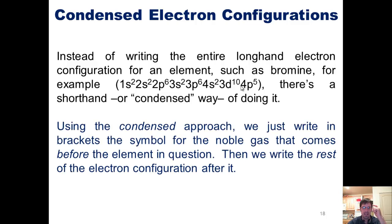Using this condensed approach, we just write in brackets the symbol for the noble gas that comes before the element on the periodic table. Then we write the rest of the electron configuration between that noble gas and the element in question.